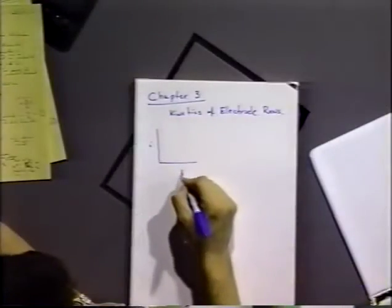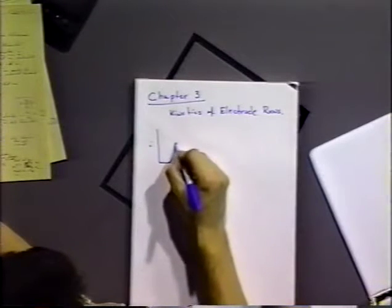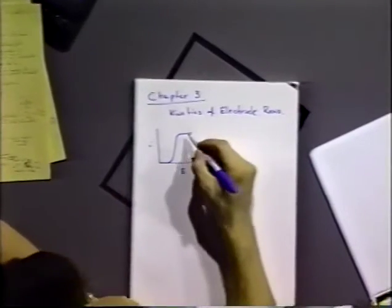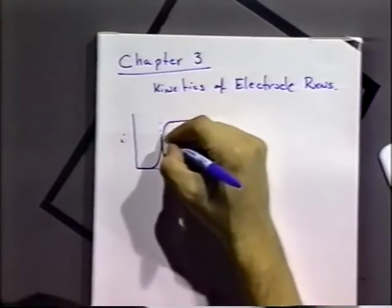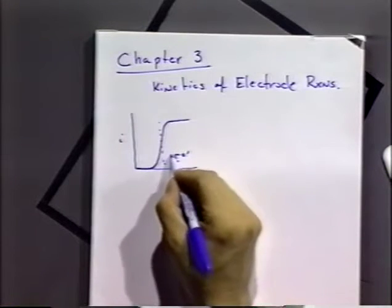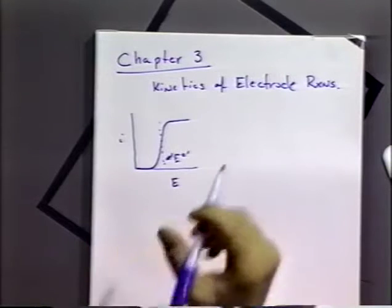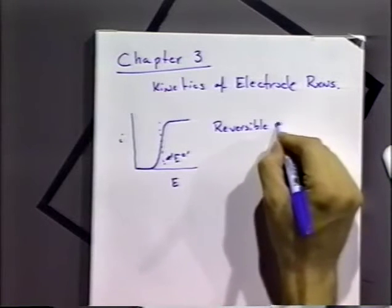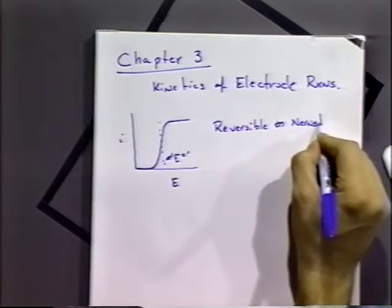Previously we considered electrode reactions that were at equilibrium — that were reversible. We drew current-potential curves where, with a solution that had only O present in solution, we'd get a nice sigmoidal shape. That plateau was a limiting current. If we looked at the half-wave potential there, that was the standard reduction potential or maybe the formal potential — on a reversible, or sometimes called Nernstian, process.